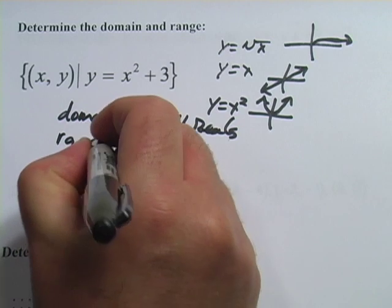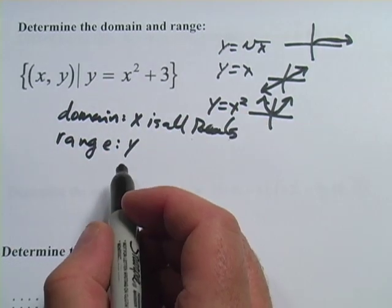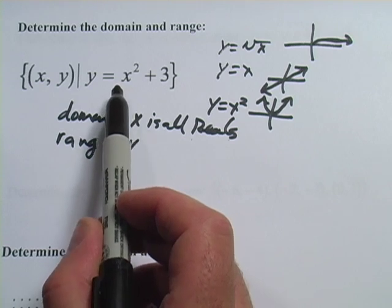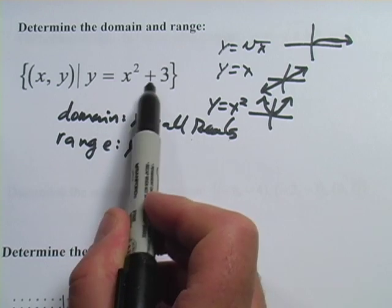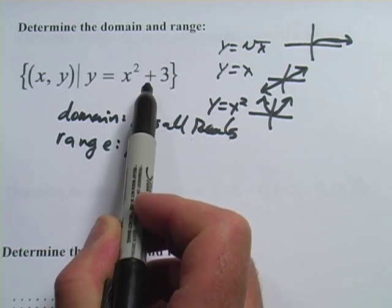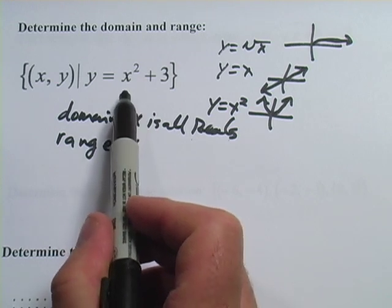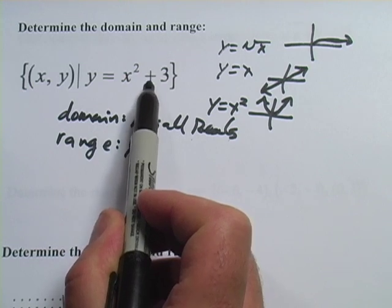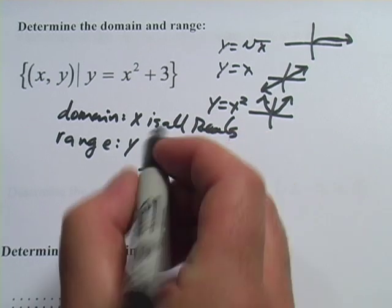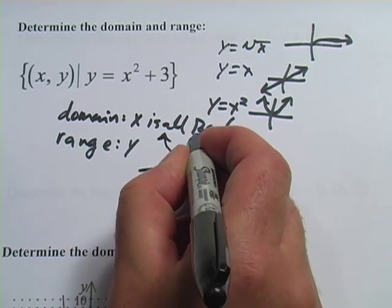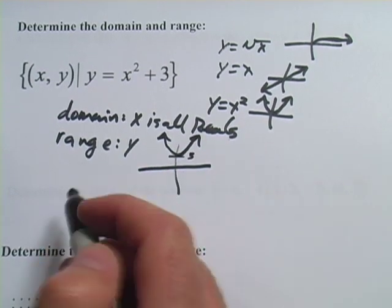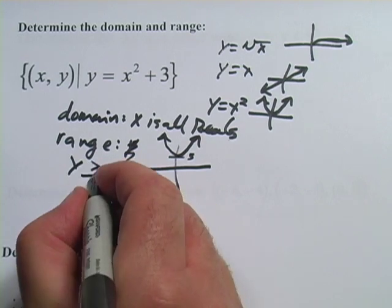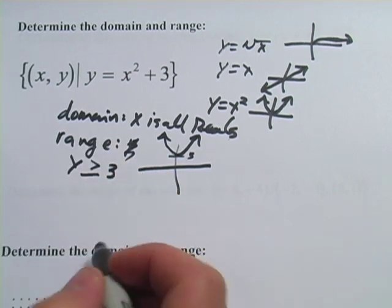For the range, notice that when you square any number, you always get a non-negative result. Then you add 3. So the lowest possible output is when x equals 0: 0 squared plus 3 equals 3. You can never get a value less than 3. The graph is a U-shape starting at y equals 3 and going upward on both sides. So the range is y is greater than or equal to 3.